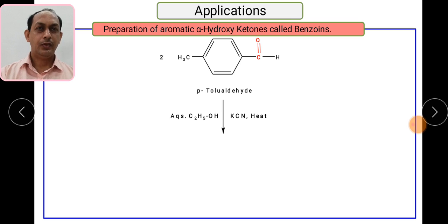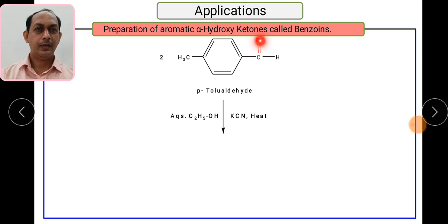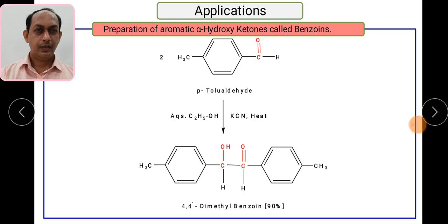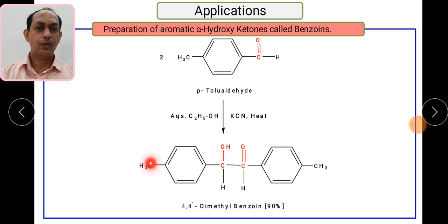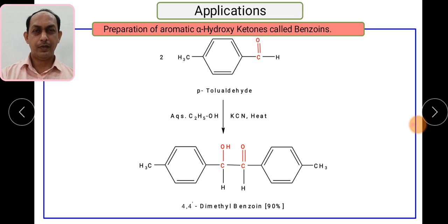Let us take another example: p-tolualdehyde (4-methylbenzaldehyde). There is a para-methyl group, and this is again a compound which does not contain alpha hydrogen. In presence of KCN, the first molecule contributes the C–OH part and the second molecule contributes the C=O part. This particular carbon next to the carbonyl is the alpha carbon bearing the OH group — so this is again an alpha hydroxy ketone, named 4,4'-dimethylbenzoin. A 90% yield is obtained. You can see the effect of the substituent present at the para position on the yield.